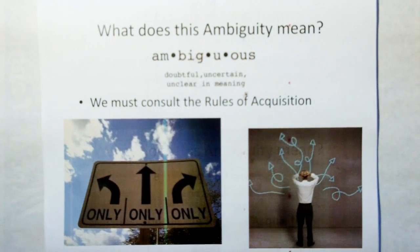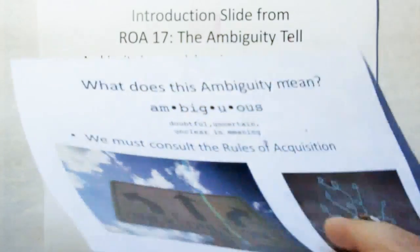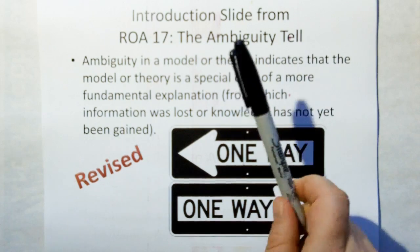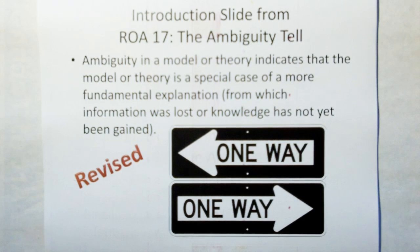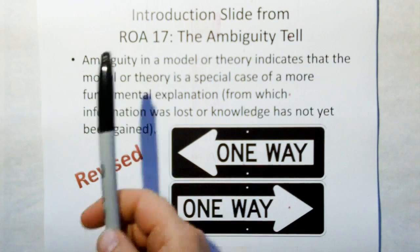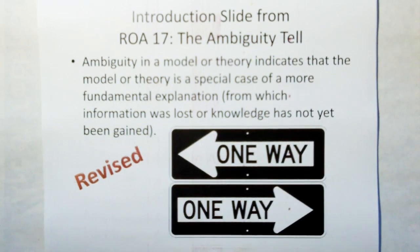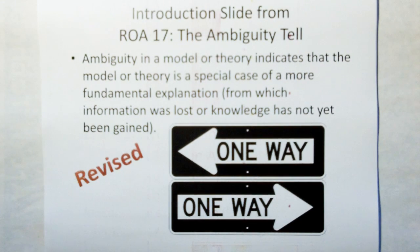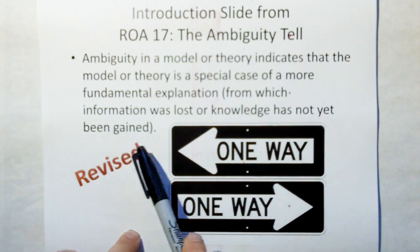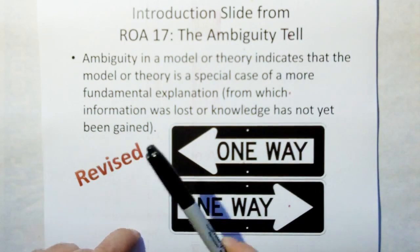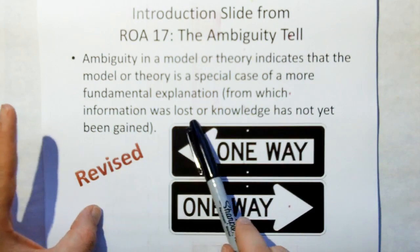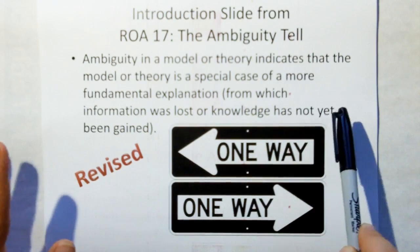What does this ambiguity mean? We have to consult the rules of acquisition. This is the cover page from the video called the ambiguity tell, rule of acquisition 17. The ambiguity in a model or theory indicates that the model or theory is a special case of a more fundamental explanation. What we have may still be useful, but the ambiguity due to the circular definition means it's not the most fundamental description. The reason you get ambiguity is because information was lost somewhere or knowledge has not been yet gained.